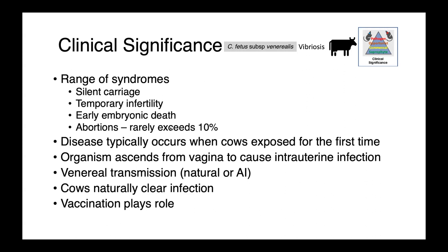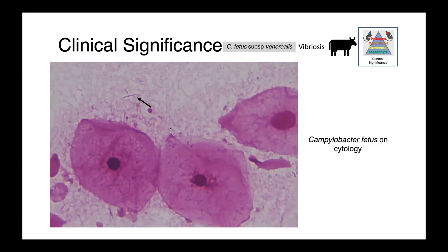The organism can be transmitted to the cow either venereally through natural breeding or artificial insemination. Cows tend to naturally clear the infection on their own, but vaccines are also available and can play a role in prevention. In this image, we have a cytological preparation showing large desquamated epithelial cells and a few Campylobacter organisms in the field — this is Campylobacter fetus on cytology.